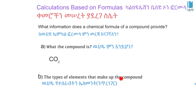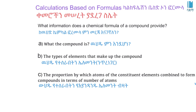The chemical formula tells us the types of elements that make up the compound. For example, carbon dioxide contains carbon and oxygen. The formula also tells us the number of each type of element combined in the compound.